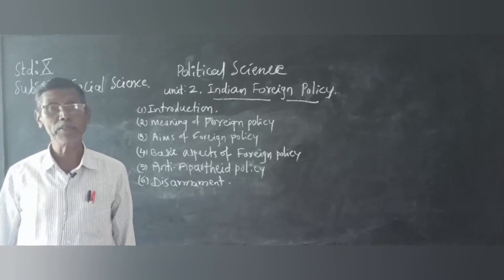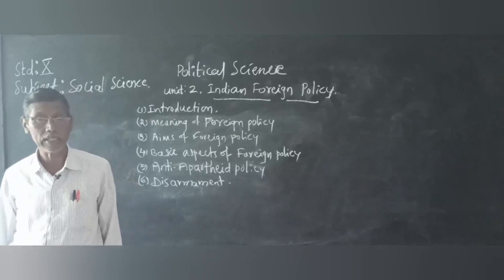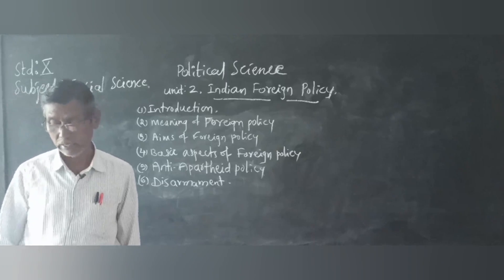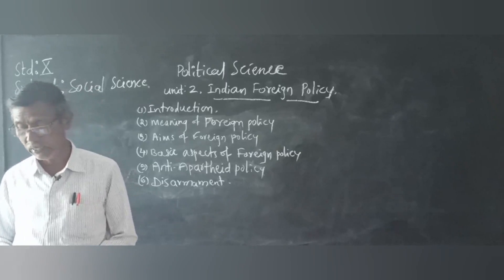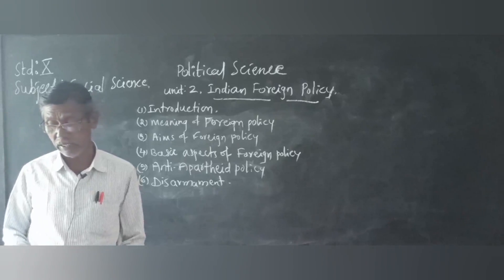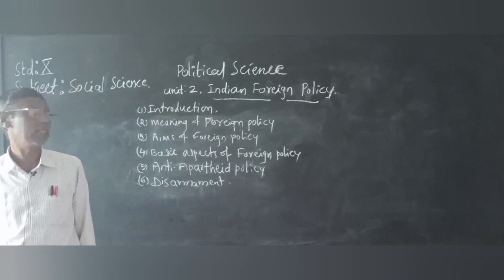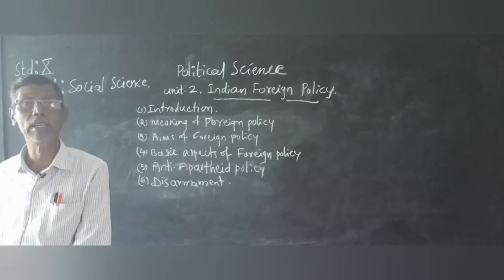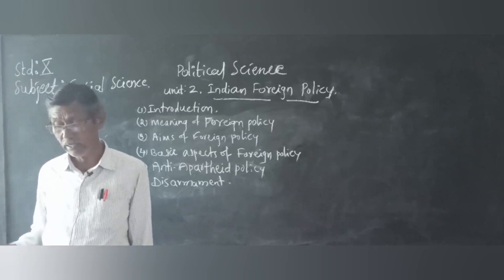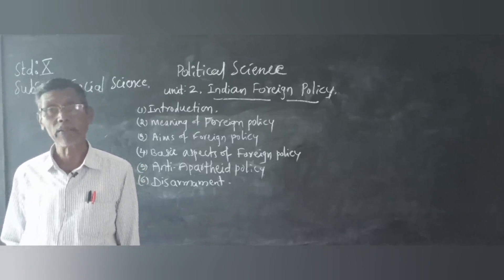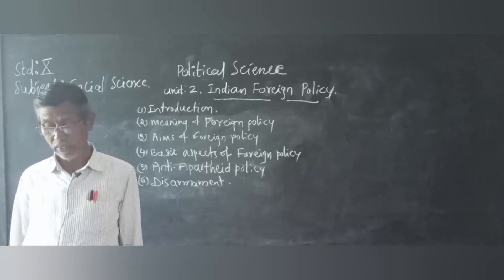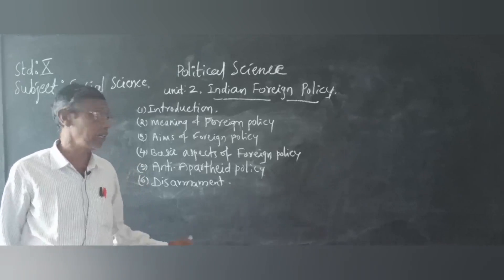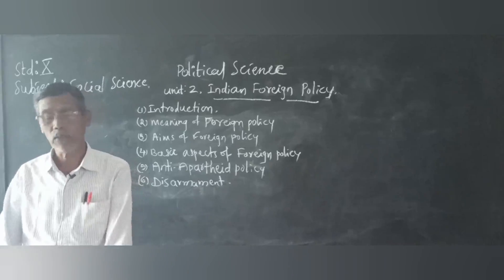Every country needs to have a foreign policy to regulate its interactions with other countries of the world. Out of 200 countries in the world, few countries are very strong and most of them are very weak. Among these 200 countries, only a few are very advanced and rich, and most of the countries are very backward and poor. According to experts, every sovereign country has its own foreign policies.